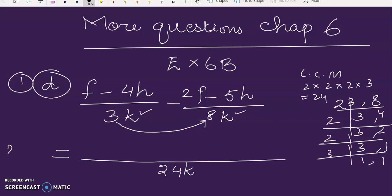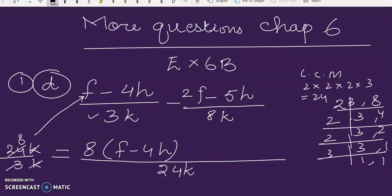Now, we divide the LCM by this 3K and we get 8. So we multiply this 8 with this numerator. Now I remove the extra terms. Now to solve this, we divide the denominator, means LCM with 8K, so we get 8, 3s are 24. Now we multiply this 3 with this numerator.